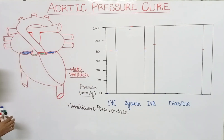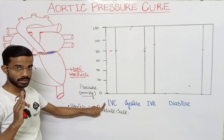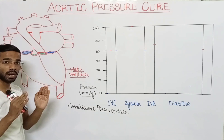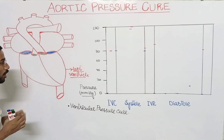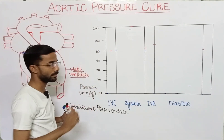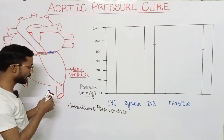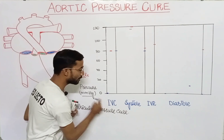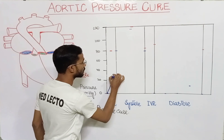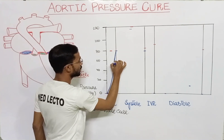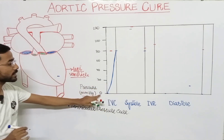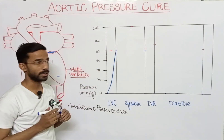Starting with isovolemic contraction: the volume remains the same but contraction starts in the left ventricle. On the y-axis you will see the pressure in millimeters of mercury. During isovolemic contraction, the pressure starts increasing and will reach 80 mmHg.